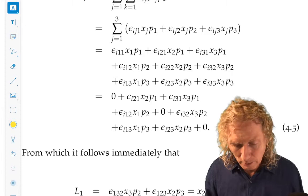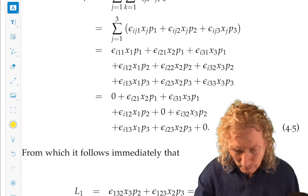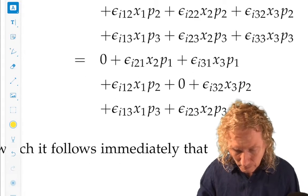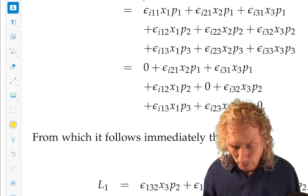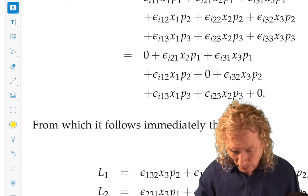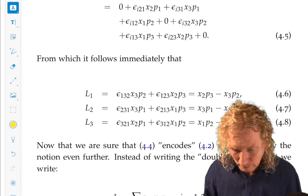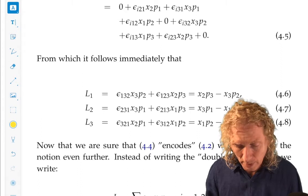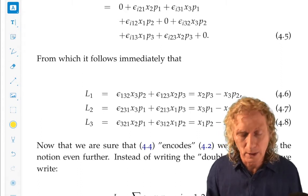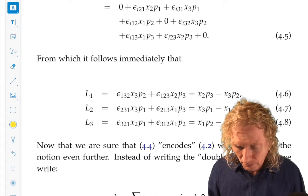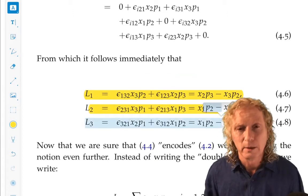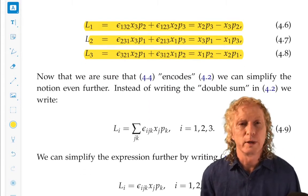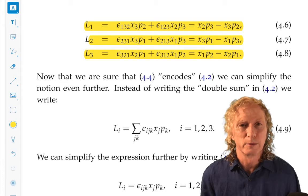And I did this for L sub i in this particular case. And then you put together all the possible combinations. And for each i, one, two, three, you go back to whether it's an even or an odd permutation or repeated. And you can see that you get the three components of angular momentum that you may be familiar with. You should be familiar with.